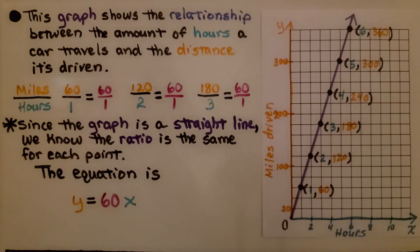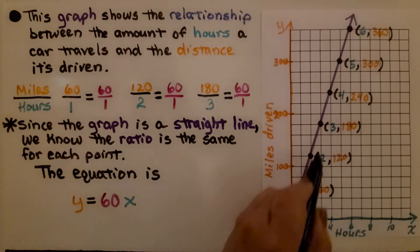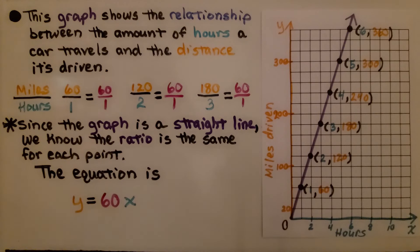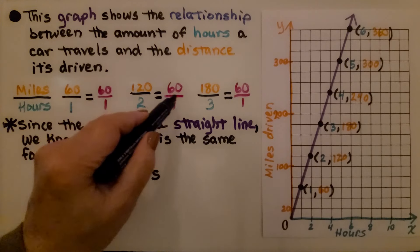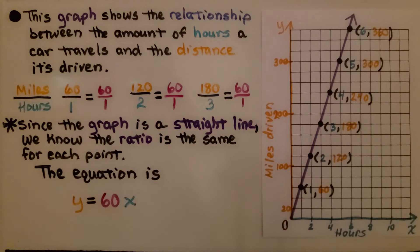...we can see a very straight line. We know it's in proportion. We know the ratio is the same for each point. It's going to be 60 over 1 or 60. And the equation is y = 60x.